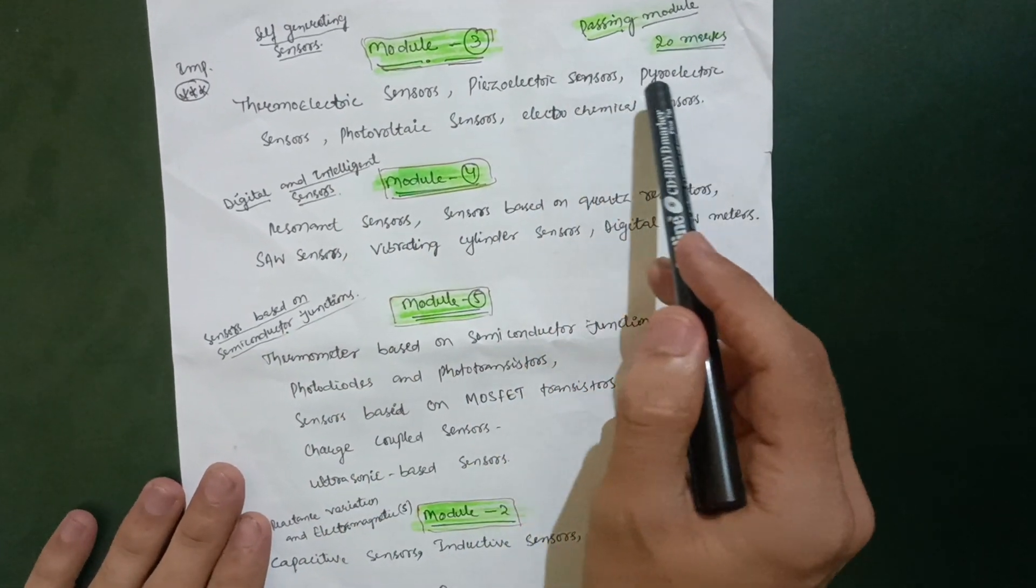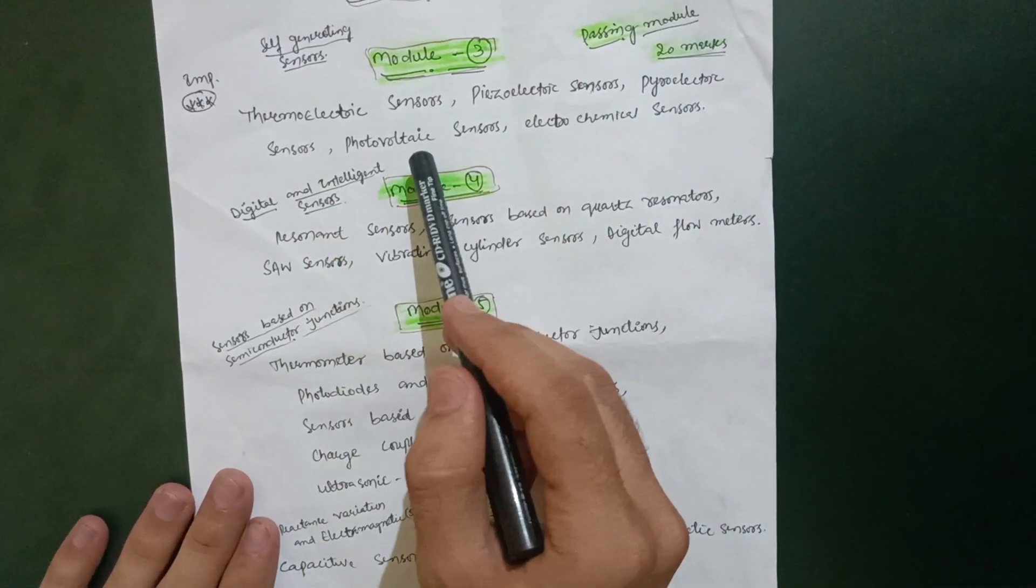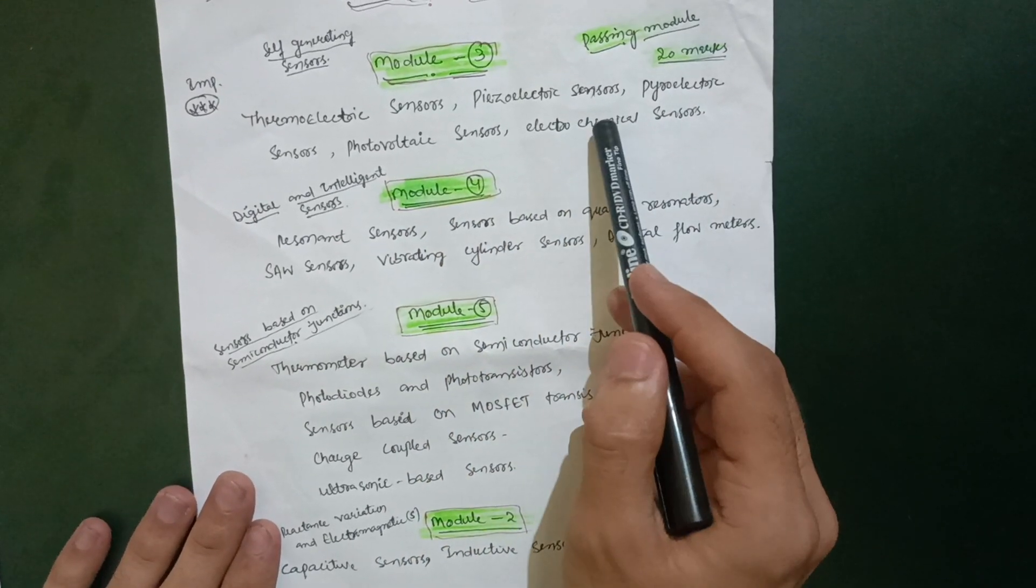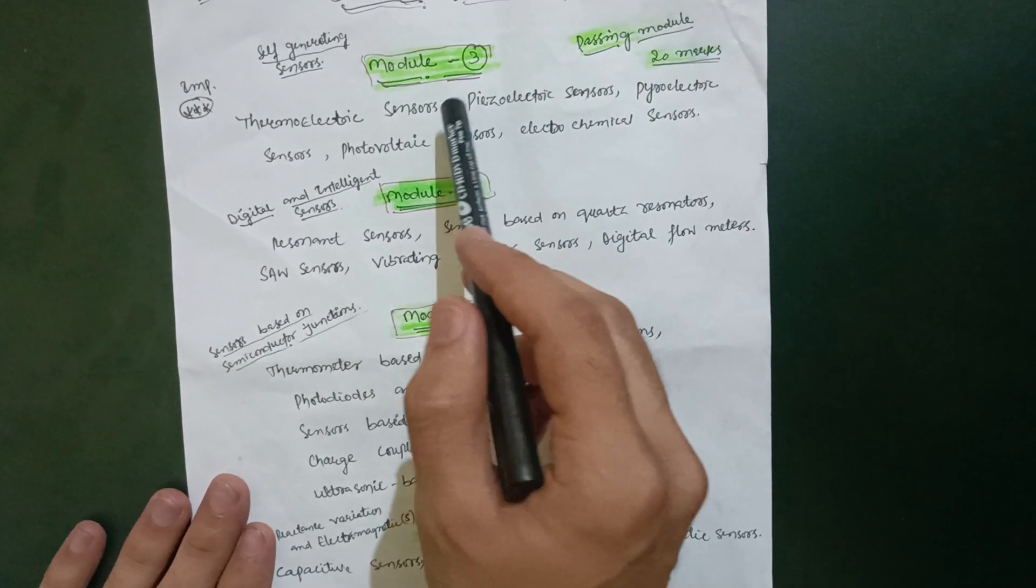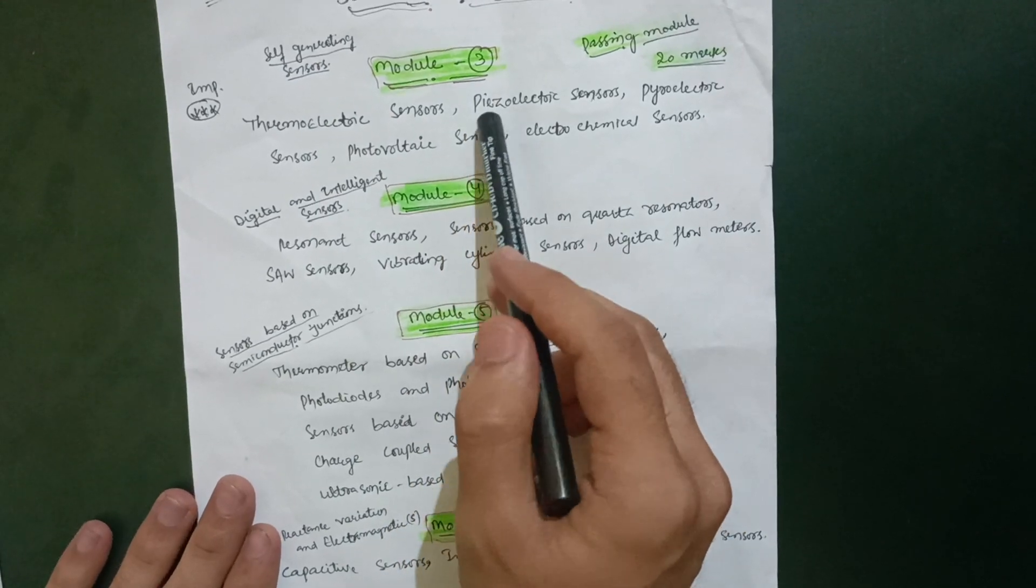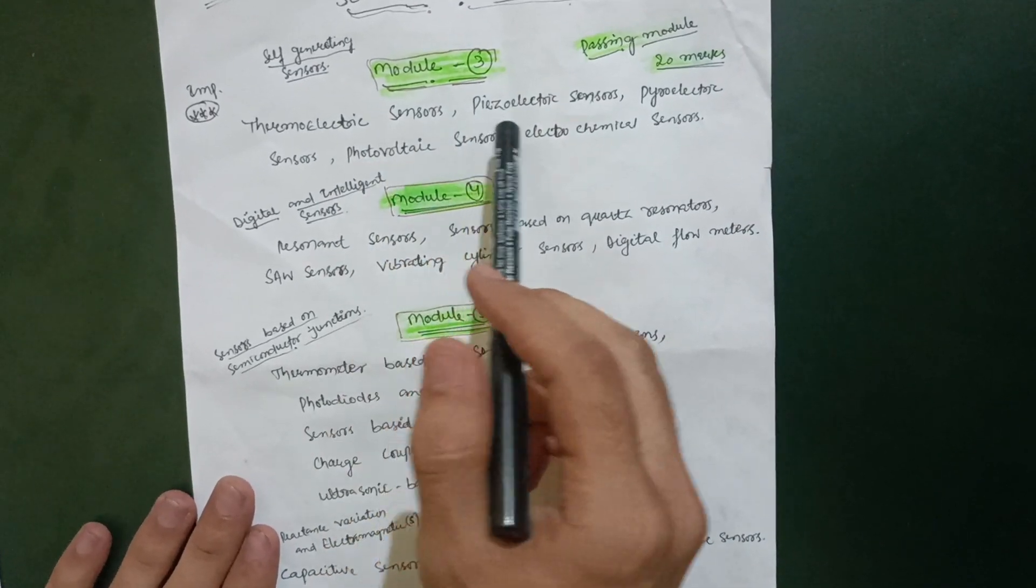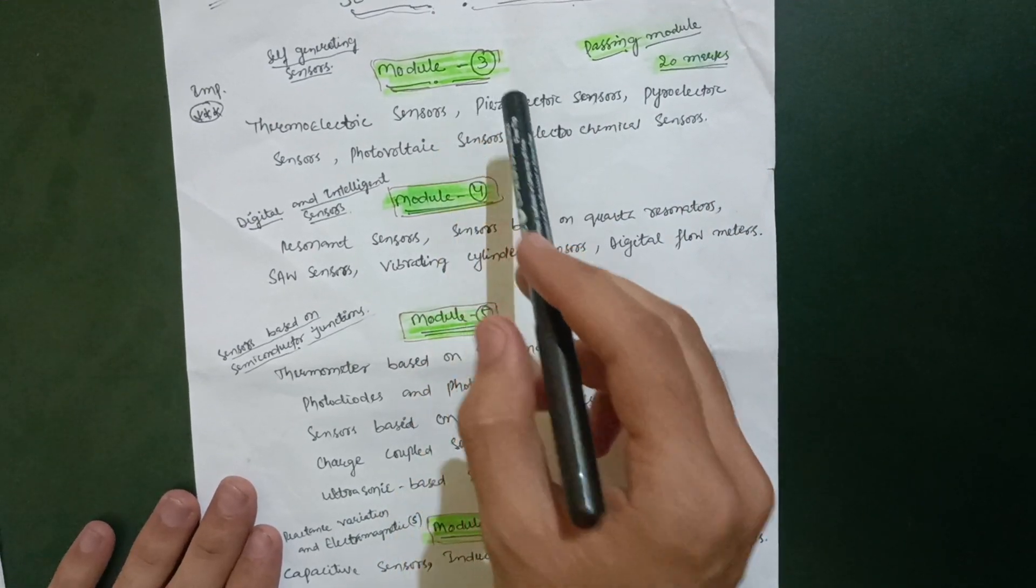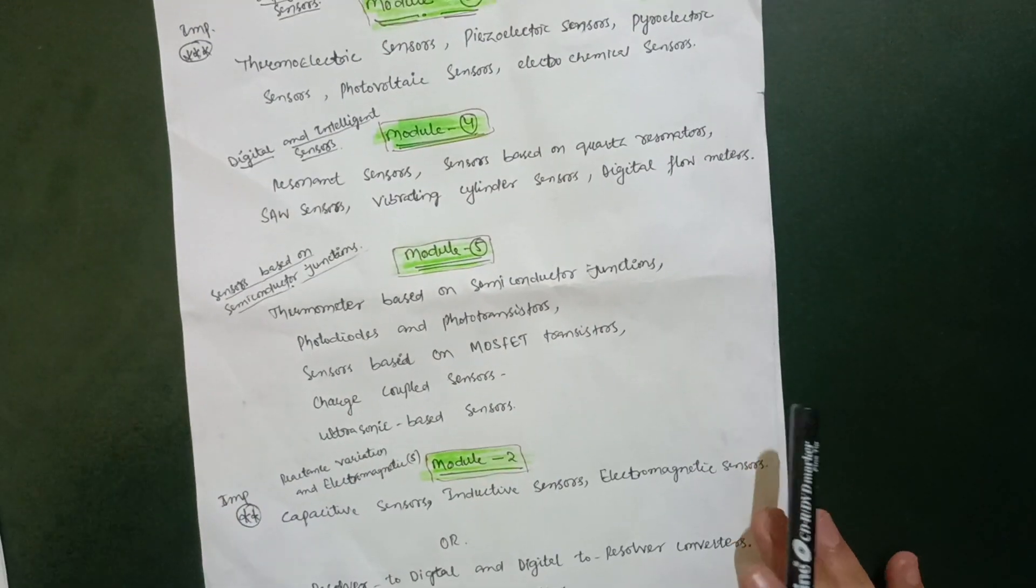Piezoelectric sensors, pyroelectric sensors, photovoltaic sensors, and electrochemical sensors - these are the five sensors in this particular Module 3. You can easily go through these types of contents and easily score 20 marks in this particular module.